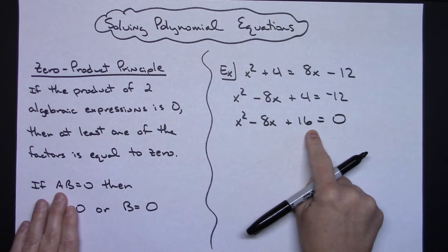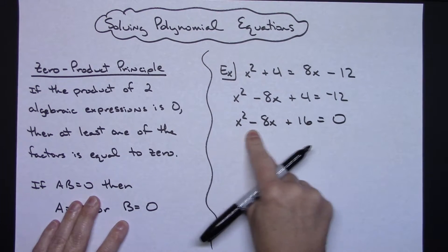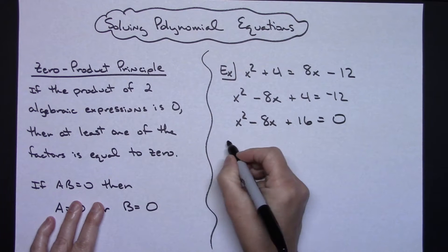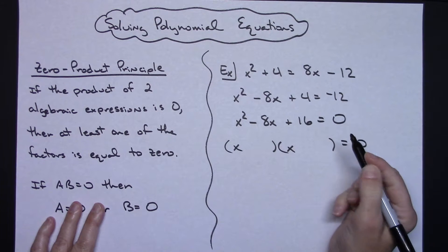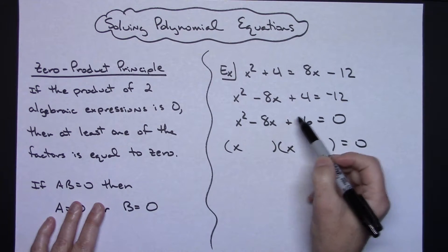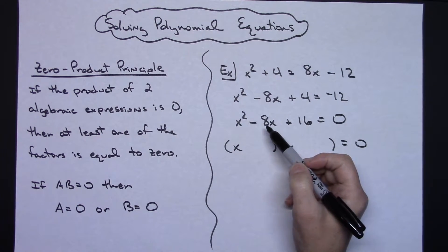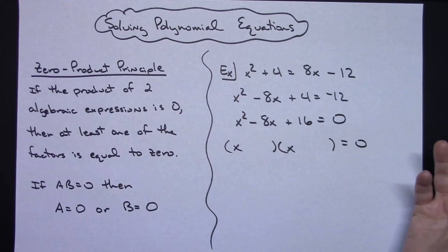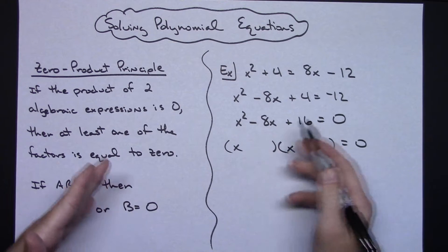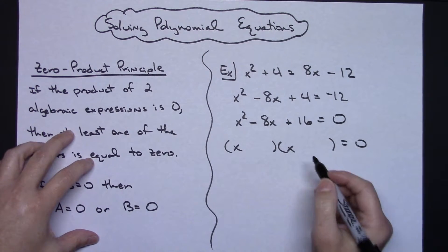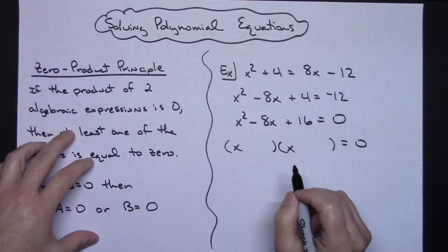Now, in order to be able to do this, I need two things multiplied together to equal this zero. So I'm going to attempt factoring. I know I need an x and an x. I need two numbers that multiply to 16, but add to the negative 8. Hopefully, at this point, if you're solving polynomial equations, the factoring is not a problem for you.